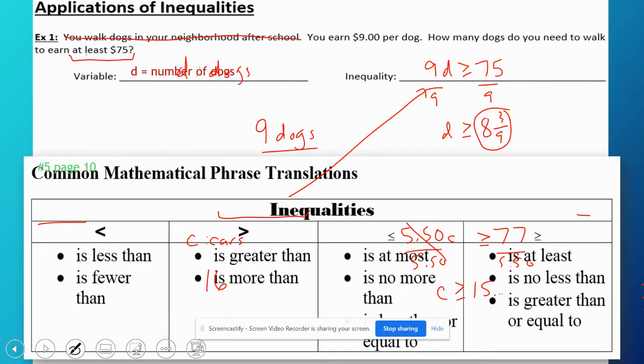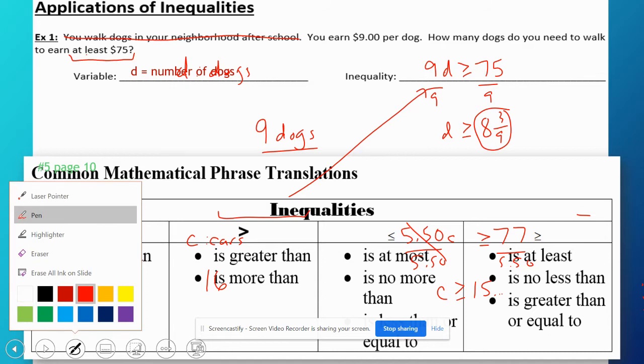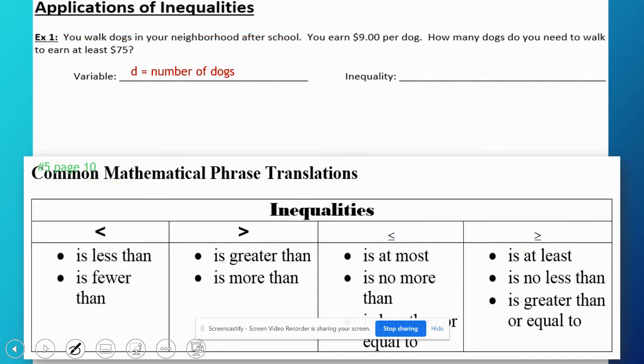This little chart you'll talk about more in class. This has some of the key words for you to use when you're looking at inequalities, when you're looking at a word problem. The ones that are a little tricky: no more than, no less than, any of the equals. You got to make sure to find out, just got to read carefully, see if it makes sense.